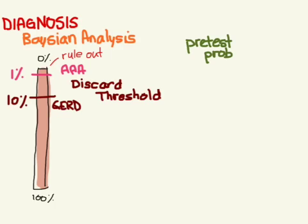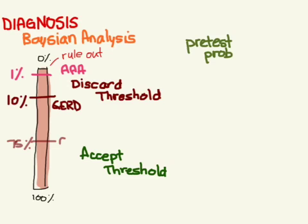Now, similarly, we have an accept threshold. And what this means is any pretest probability that is above that, we're going to say it is that disease. And so let's take GERD again. And so say we set that at 75% for the accept threshold for GERD.